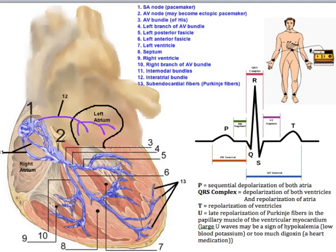The impulse then travels from the AV node through the bundle of His, represented by number three. The bundle of His splits into two branches within the interventricular septum: the left and right bundle branches (numbers four and ten). The left bundle branch depolarizes the left ventricle and the right bundle branch depolarizes the right ventricle. The two bundle branches taper out into multiple Purkinje fibers, which stimulate individual groups of myocardial cells to contract.